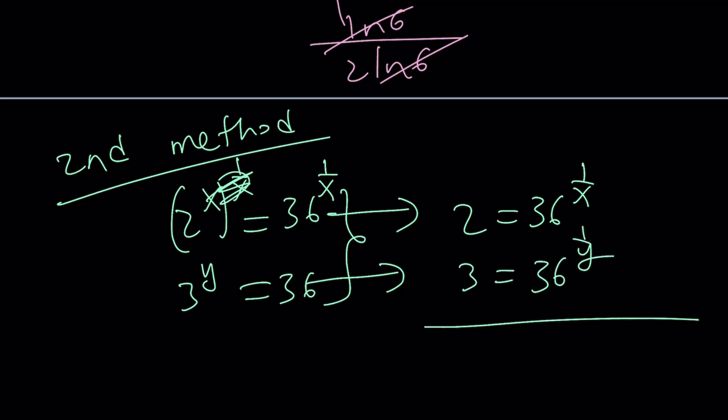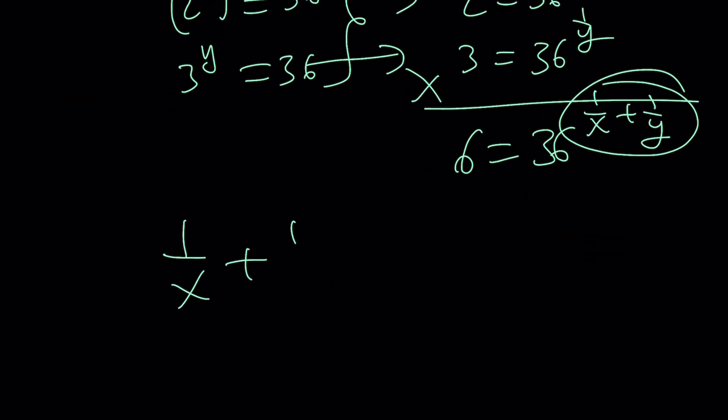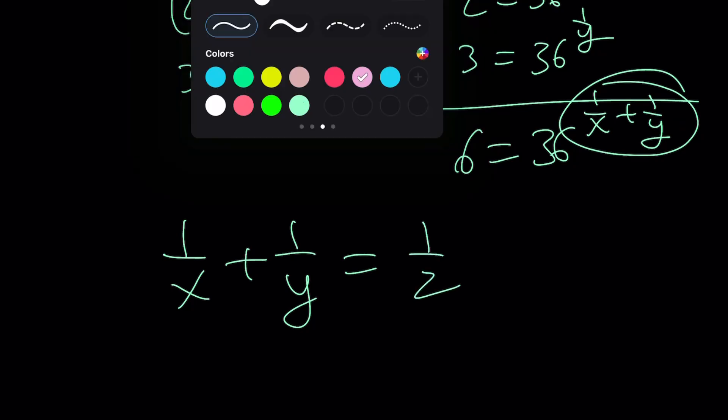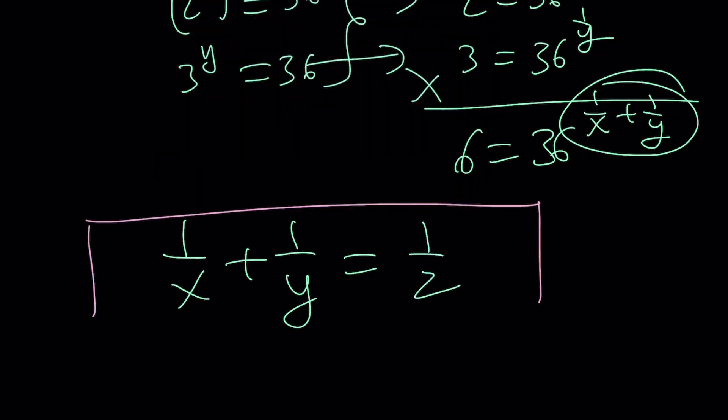x cancels out, and you get 2 equals 36 to the power 1 over x. From here, you get 3 equals 36 to the power 1 over y. Remember, we're looking for 1 over x plus 1 over y. So why not multiply these? 6 equals 36 to the power 1 over x plus 1 over y. And this becomes 1 half because that means the square root. You see how beautiful that is? That's what I love about my second methods.